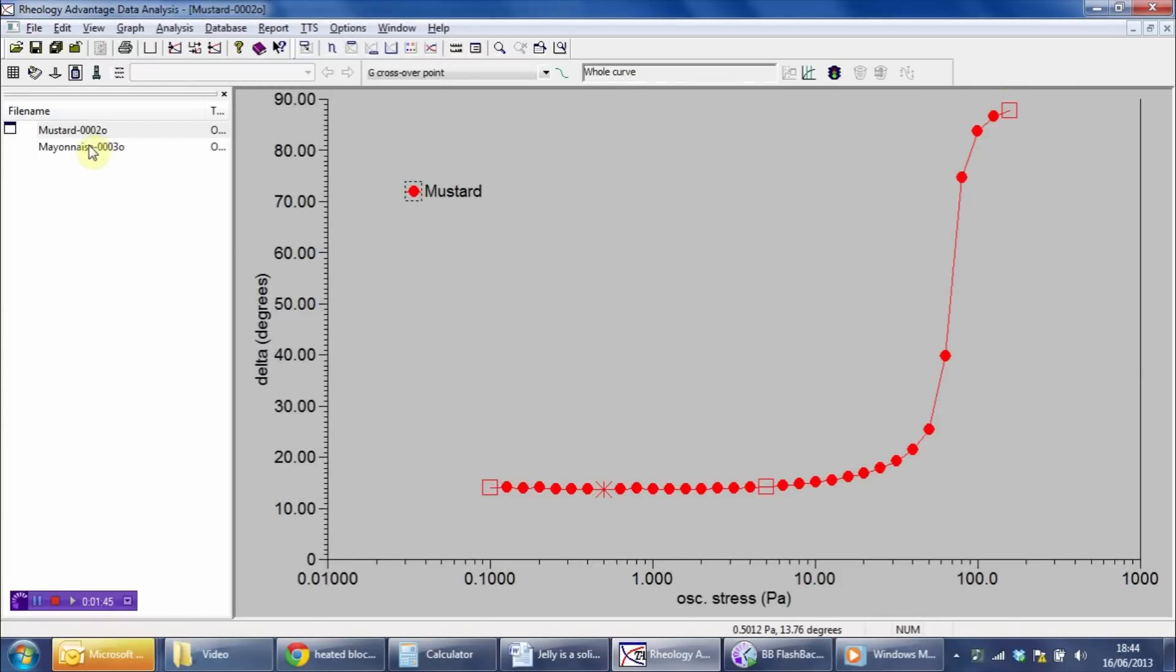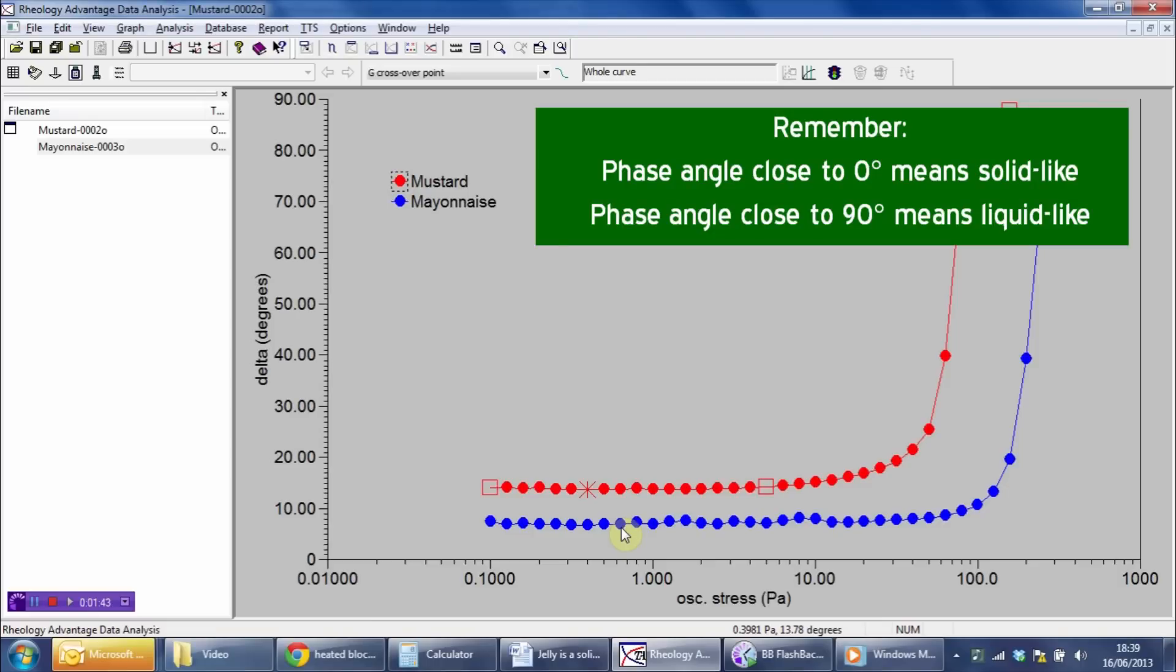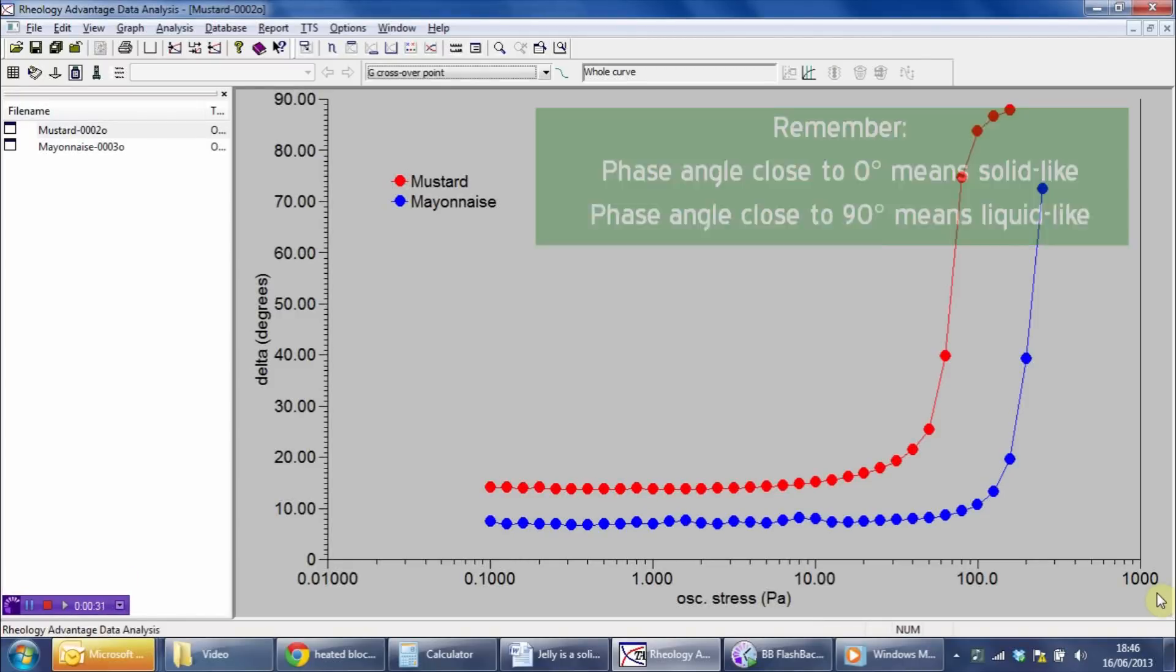Let's now compare this to the mayonnaise. What we can see with the mayonnaise is, firstly, the mayonnaise has a lower phase angle in the plateau region here. That tells us that the mayonnaise structure is a little bit better developed than that of the mustard. More strikingly, we can see that the mayonnaise yields at a significantly higher stress than the mustard.